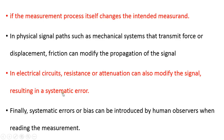Systematic error can also be introduced by the human observer — this is known as error due to parallax. This is paramount in analog systems; in digital systems there is no parallax error.